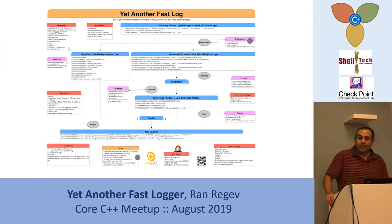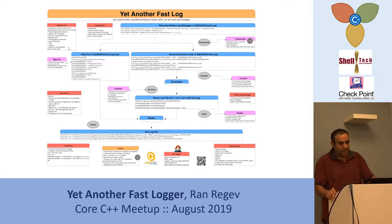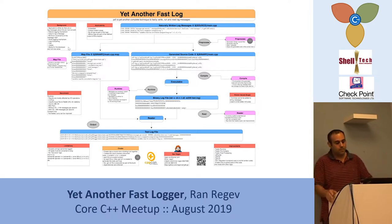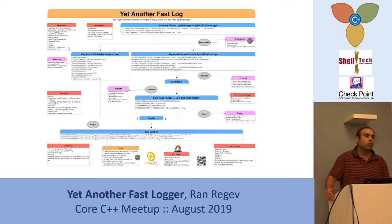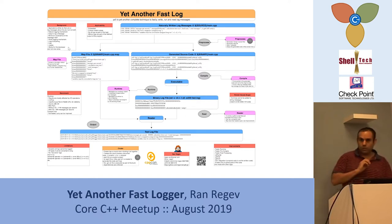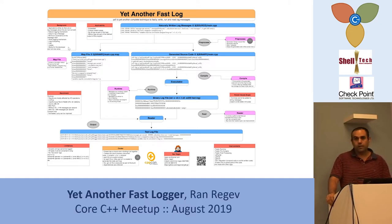Yet Another Fast Log is a mechanism which makes logs quick in your runtime, in your main thread — the place where you need to log quickly and not stop the working thread.